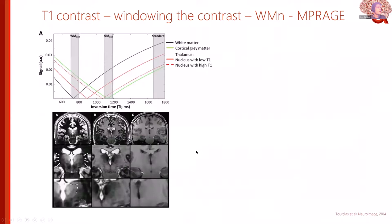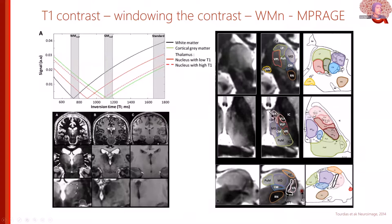We were not the only ones trying to optimize thalamic contrast. The Keuken lab did nice work playing with MP2RAGE, looking at whether nulling the white matter or gray matter signal helps. They observed that the white matter-nulled MP2RAGE doesn't give much stronger absolute contrast, but the relative contrast is much higher, allowing atlas-based segmentation to automatically delineate many thalamic nuclei. Importantly, the contrast mechanism does not change fundamentally with this white matter nulling approach, which is why neural networks can transfer well from such images to segmentation.